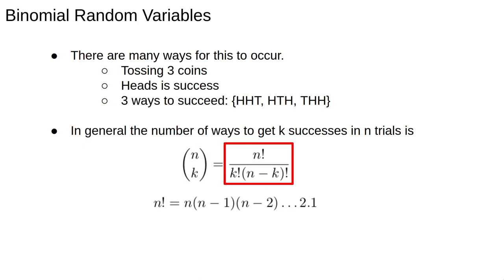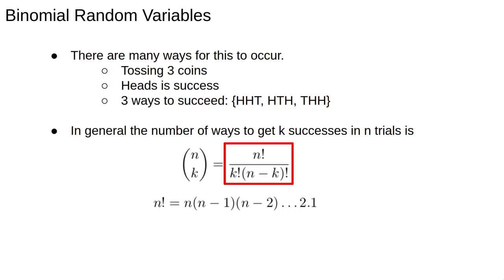n choose k is given by this formula where the exclamation mark is read as factorial and it means to take the product of n with all the integers less than n down to 1. We can understand this by thinking about how we allocate k successes in n spaces.